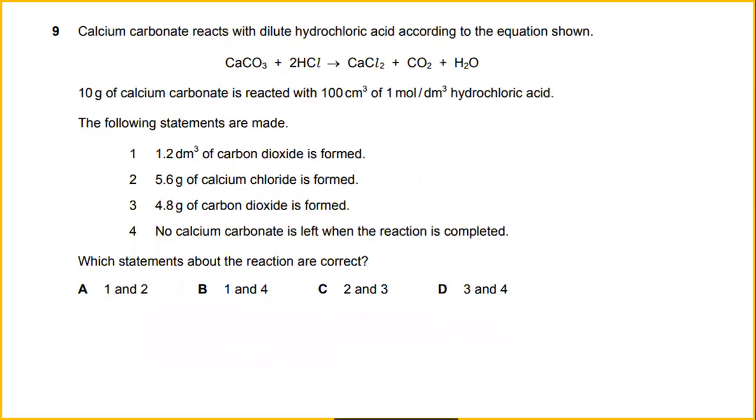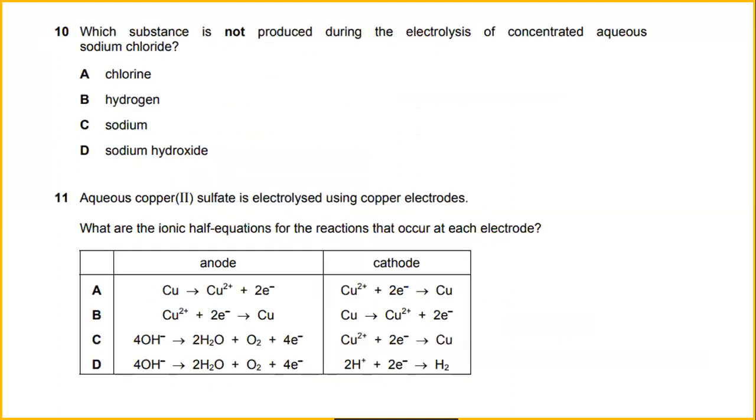Calcium carbonate reacts with dilute hydrochloric acid according to the equation shown below. 10 grams of calcium carbonate is reacted with 100 cm3 of 1 mole hydrochloric acid. So the following statements are made. Which statement about the reactions are correct? So the answer for number 9 would be 1 and 2, which is 1.2 decimeter cube of carbon dioxide is formed. And second, 5.6 grams of calcium chloride is formed.